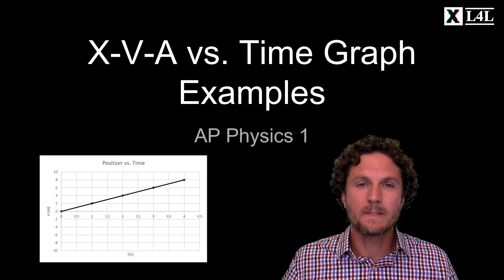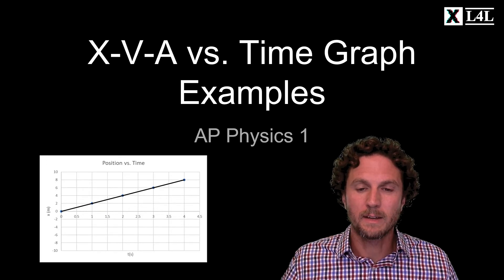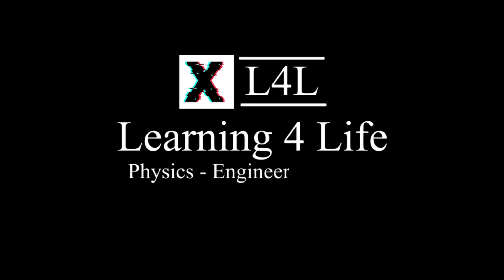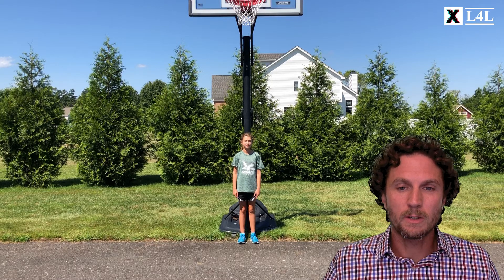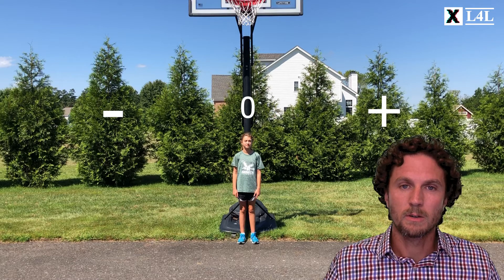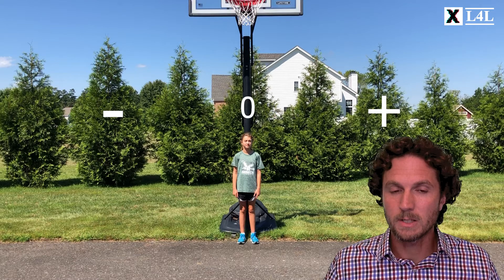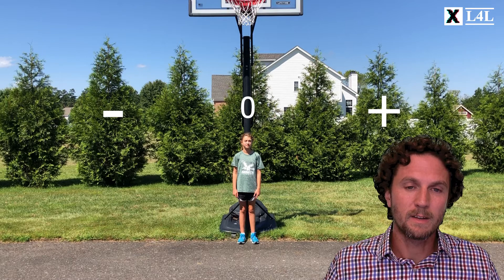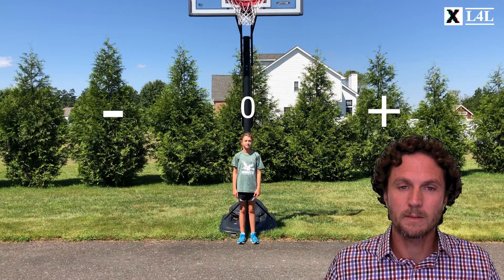Today class we'll be taking a look at position and velocity versus time graph examples. So Madison, my daughter, was nice enough to help me out with some of these again. For all the videos where you see a basketball hoop, I want you to use the basketball hoop as your reference position for zero. Everything to the right would be the positive direction and to the left would be the negative direction, with the basketball hoop as zero.